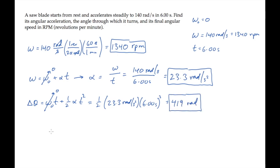And if you want, you can convert that 419 radians into revolutions to see that the blade spins 66.7 times during the acceleration.